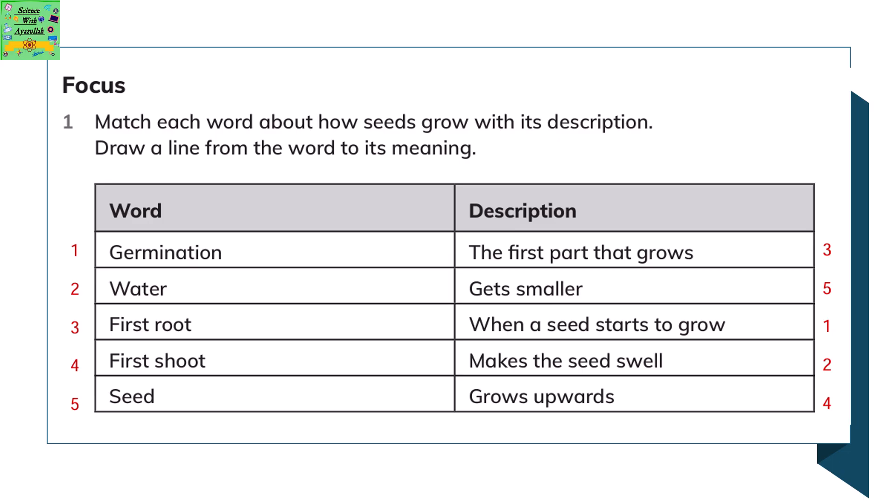Germination: it is a process of when the seed starts to grow. Water: makes the seed swell. First root: it is the first part of the seed that starts growing downwards into the soil.